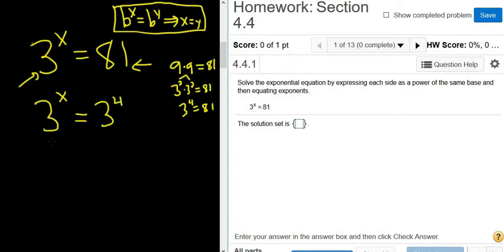All right, so now we can use our rule. Our b is 3. We have 3 to the x equals 3 to the 4. That means that x must be equal to 4.